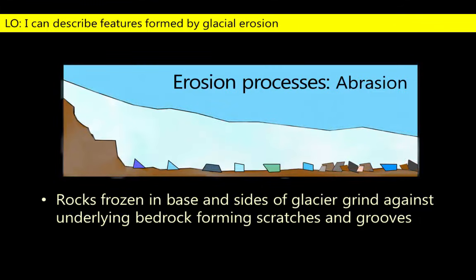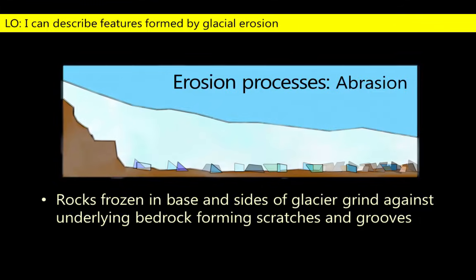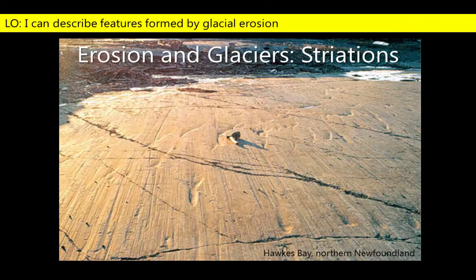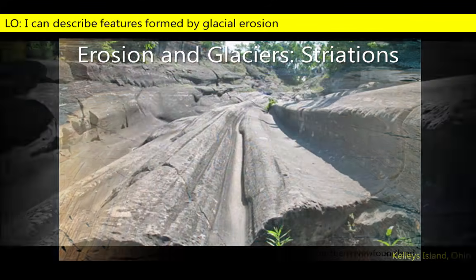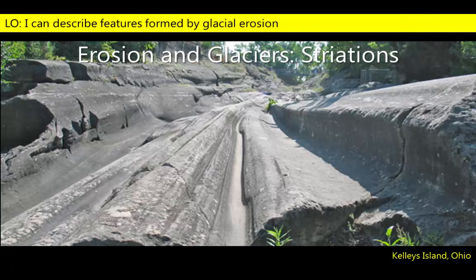Rocks frozen into the base and sides of the glacier act like sandpaper, scraping against the surrounding valley walls and floor in a second process of glacial erosion known as abrasion. Abrasion leaves behind tell-tale striations in the bedrock that identify the direction of motion of the ancient glaciers. Some striations, like these grooves worn into this limestone bedrock, can be very deep, indicating they were formed below thick, powerful ice sheets.